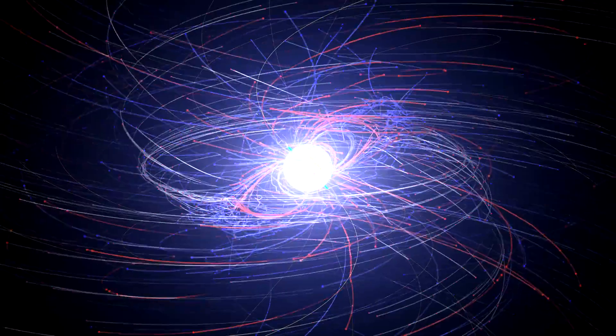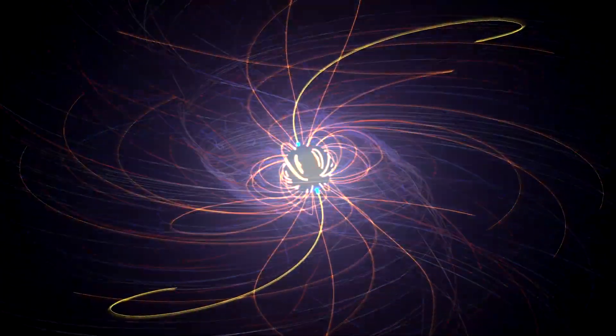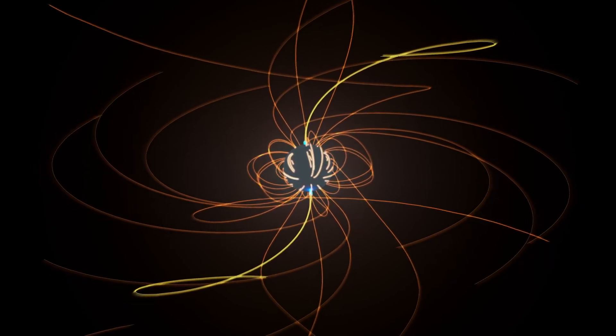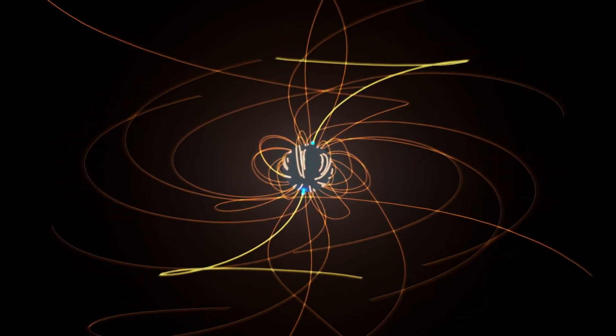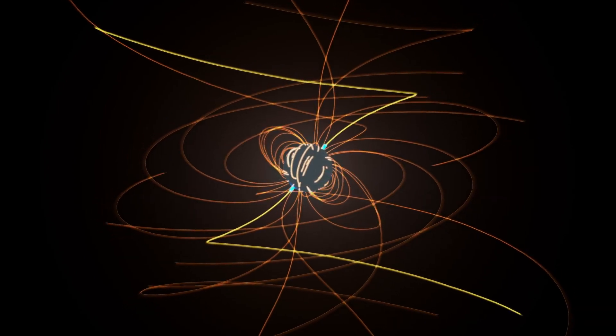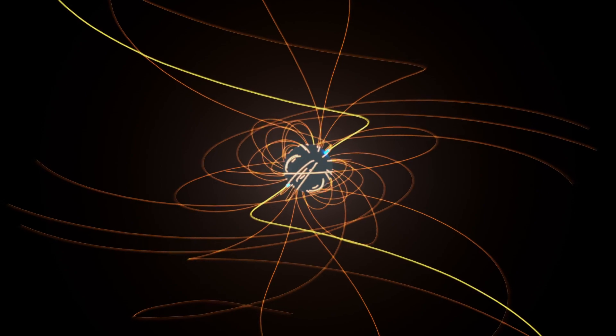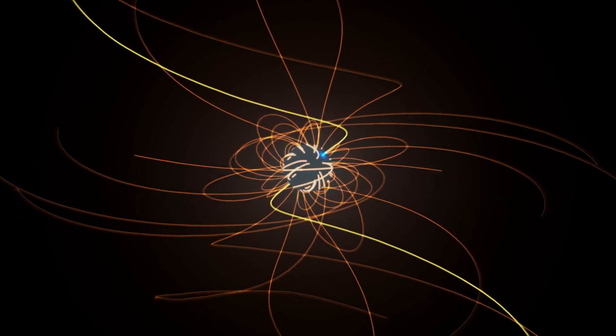Now, new computer simulations are providing surprising insights. A pulsar contains some of the strongest magnetic fields known and can spin thousands of times a second. That means it's a powerful dynamo, generating an electric field so strong particles are ripped out of the surface and accelerated into space.